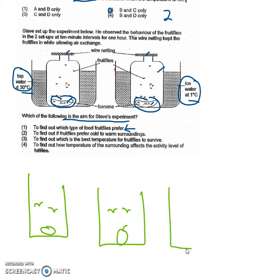Alternatively, you can also have one jar where there is a wire mesh over here and there is an apple here and a banana here, and there are some fruit flies, and you see which side the fruit flies prefer.